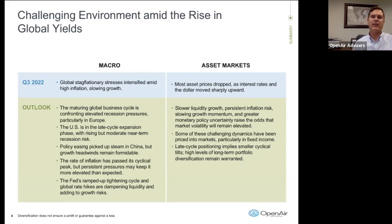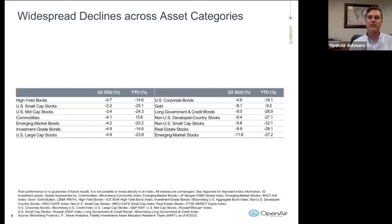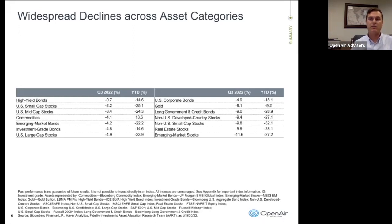We have late cycle positioning, which implies smaller cyclical tilts to the portfolio, while long-term portfolio diversification does remain warranted. There have been widespread declines across asset categories. This has been one of those years — the full recipe of challenges. Most of the time when the market's going down, a fully diversified portfolio with stocks and bonds means that as stocks come down, you usually see appreciation in your fixed income. But this has been the year where it's hit both sides of the portfolio.